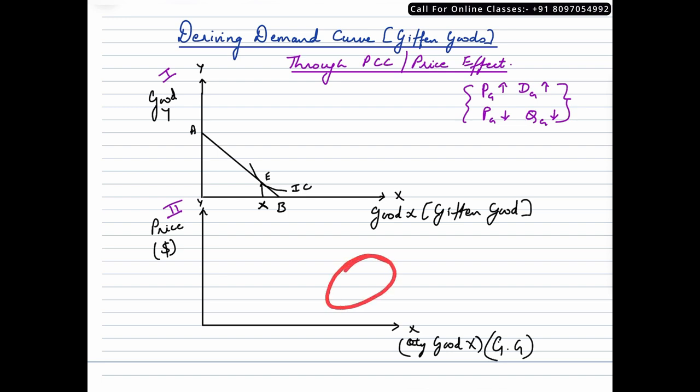Let us say this is the initial quantity of commodity X consumed by the consumer, which is equivalent to OX. Now we are assuming that the price of this Giffen good is falling. We should know by now that when the price of a commodity falls, what will happen to the budget line? The budget line would rotate outwards.